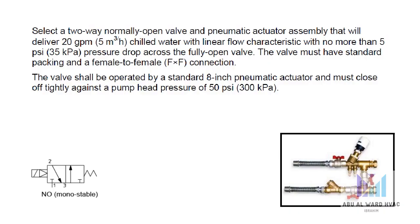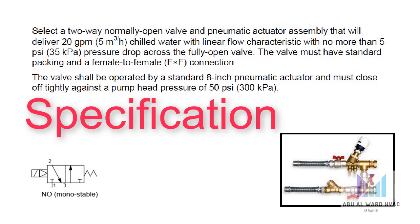Now let's have another example. Select a two-way normally open valve and pneumatic actuator assembly that will deliver 20 GPM of chilled water with a linear flow characteristic, no more than 5 PSI pressure drop across the fully open valve, with standard packing and a female-to-female connection. These are the specifications for what we need to select.